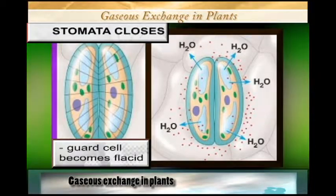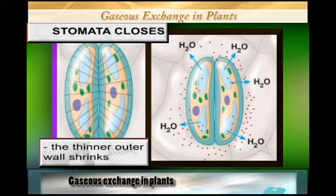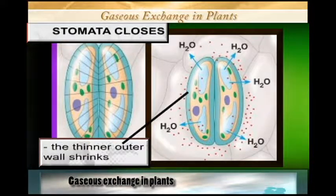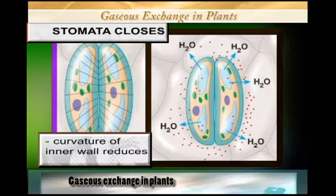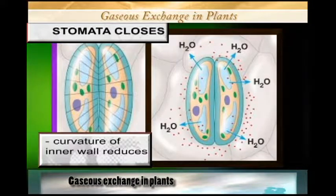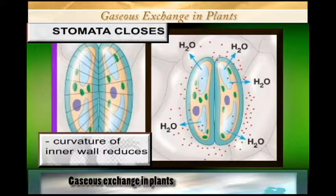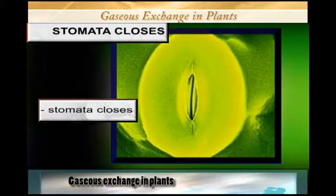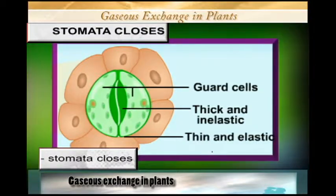Because the osmotic pressure of the epidermal cells is above that of the guard cells, the guard cells become flaccid. The thinner outer wall shrinks, and the curvature of the inner wall reduces. In the process of reducing, the stomata closes.